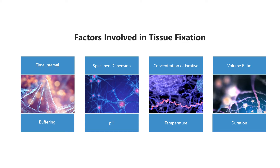Buffering: fixation is best performed near neutral pH, in the range of 6 to 8. Hypoxia of tissues lowers the pH, so buffering capacity must be present in the fixative to prevent excessive acidity. pH: good fixation is achieved at a pH of 6 to 8. Outside this pH range there may be damage to the ultrastructure.